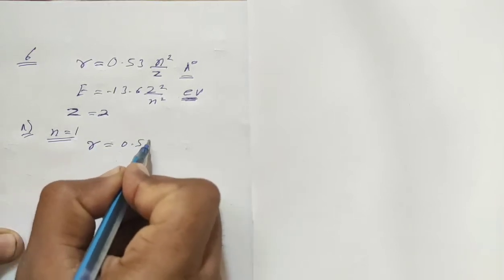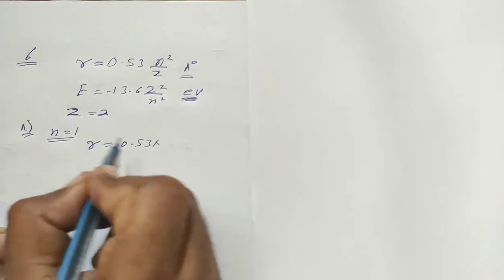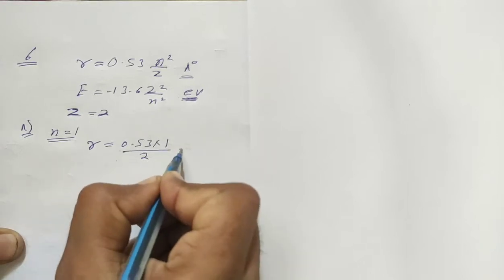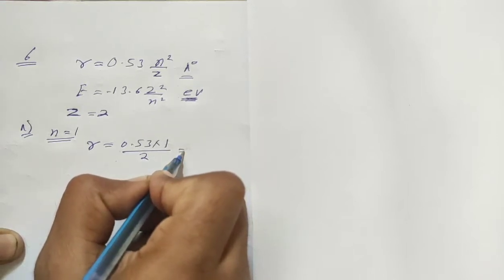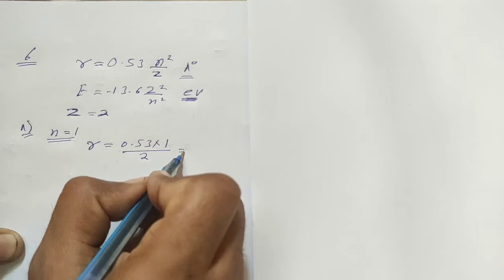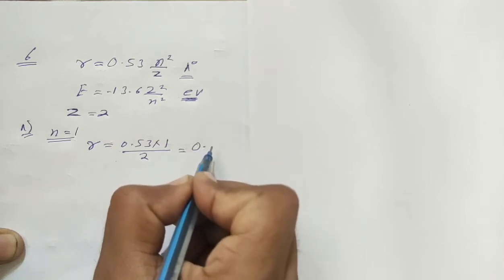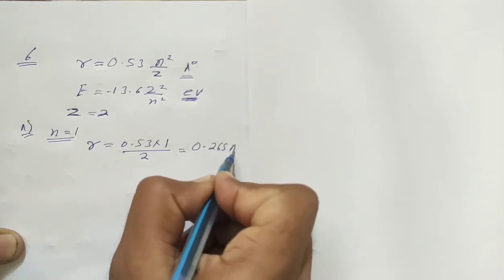Radius is 0.53 times n equals 1 upon z equals 2. So if we solve, the radius is 0.265 angstrom.